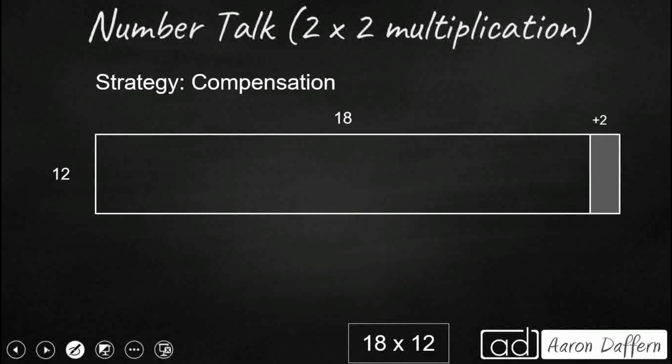We could also use compensation. Compensation, what that does is that lets us change one of our factors just to make it a little bit easier to multiply. We're going to say, you know what? 18 is really close to 20. And if we could make this a 20 by adding 2 to that factor, well, that's going to be very easy to multiply. 20 times 12. That's 2 times 12. That's 24. Add that 0. That's 240.